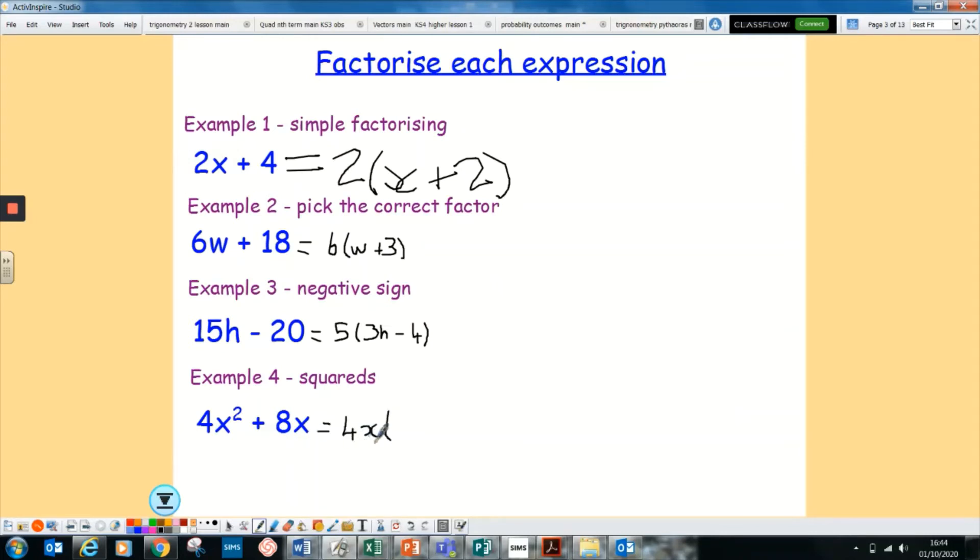And then you go, how do you go from your 4x to 4x²? Well, you'd have to multiply it by an x. And then going from 4x to 8x, it would be a plus 2. So that's obviously, it gets a little bit harder because you've got your numbers and some letters in both.